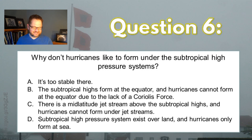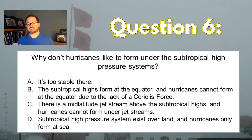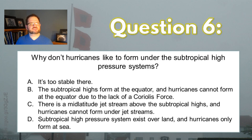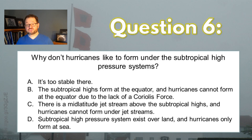There are lots of tempting options on here, but the right one is actually A. It is just too stable under a subtropical high. The subtropical highs have that sinking motion that produces stable structures in the atmosphere, like temperature inversions, that just make it too hard to have the vertical motions you need in the atmosphere in order to produce the rising and sinking motions that you have in a hurricane.